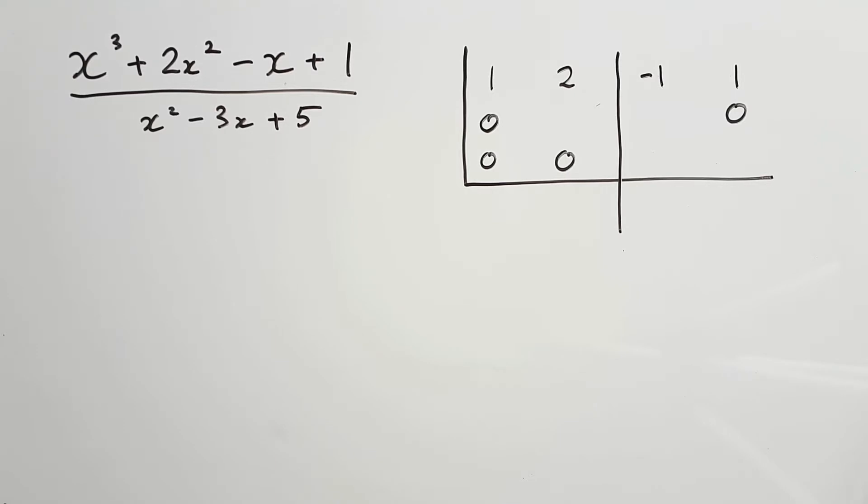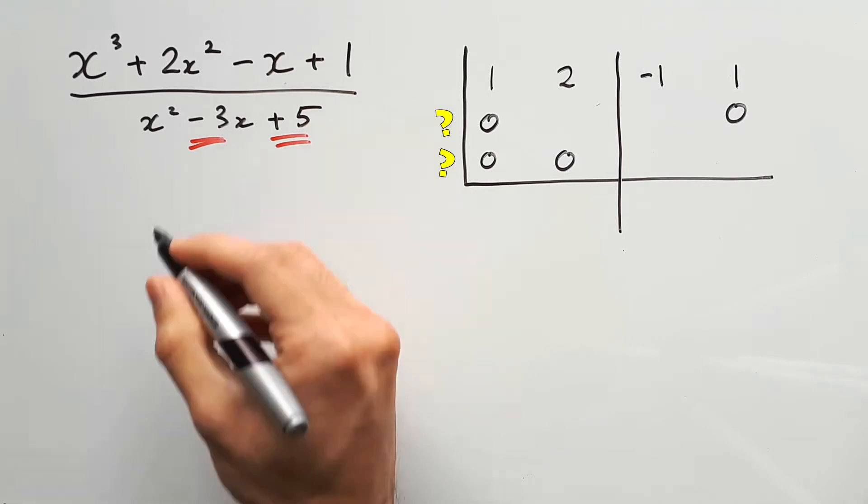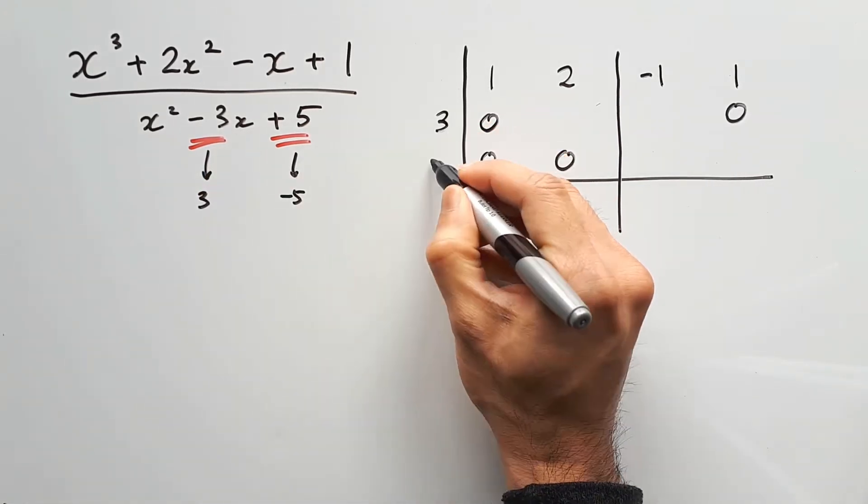And as for what needs to be written outside, since we have two rows of zeros now, we will have to write two divisors outside. These divisors come from negative 3 and positive 5, and just like in the usual synthetic division, you'll want to take the opposite sign of these numbers, so positive 3 and negative 5, written in that order.